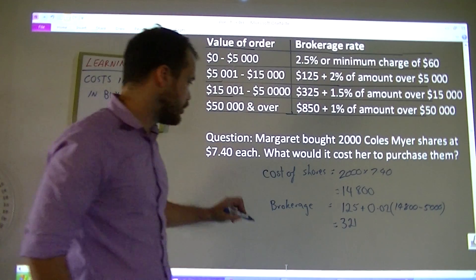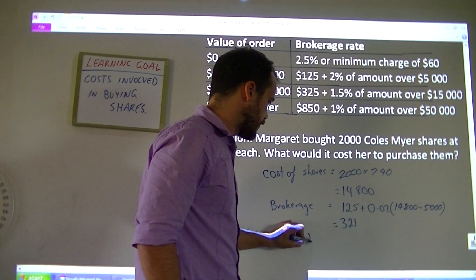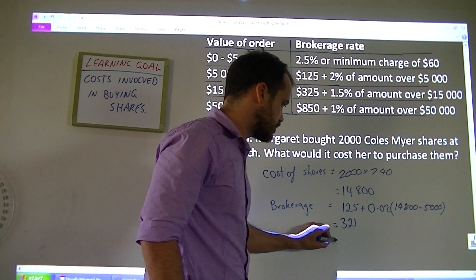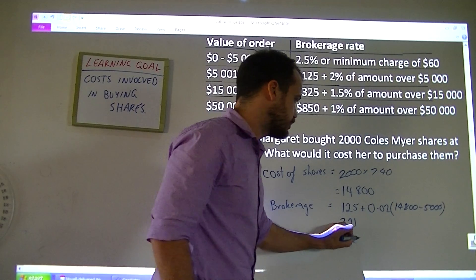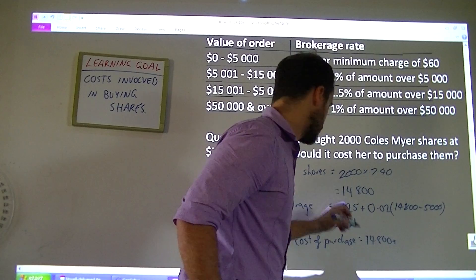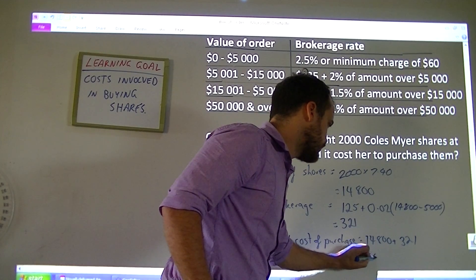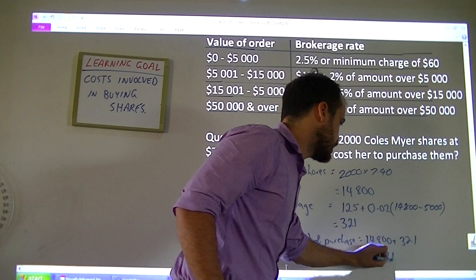The total cost of buying these shares is going to be equal to the price of the shares, $14,800, plus that brokerage fee, $321. That's going to be $15,121.